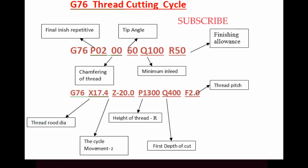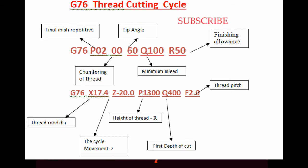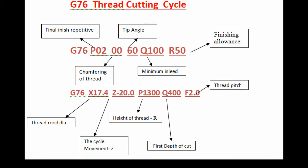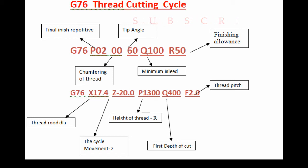In the Z axis, there is the length of threading. P1300 is the thread height. How do you calculate this value? It is standard 0.65 multiplied by the pitch. This P value is the depth of cut — specifically the first depth of cut.